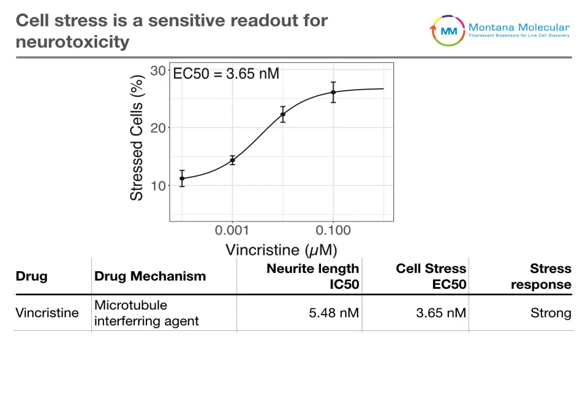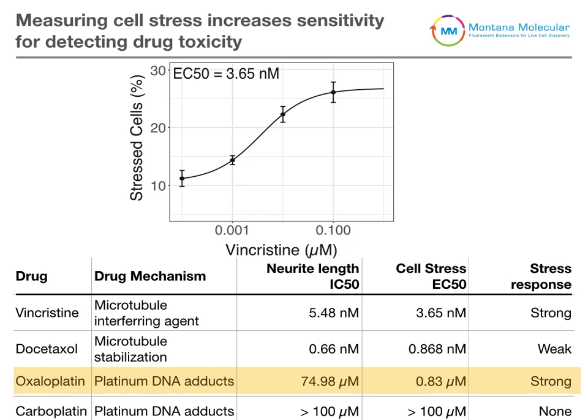Using the standard assay for chemotherapy-induced neurotoxicity — the measurement of neurite length — we have highly similar IC50 values for neurite length and EC50 values for the percentage of stressed cells. This holds true for a number of other compounds that we tested, except for oxaliplatin, where the cell stress assay was able to detect neurotoxicity about two orders of magnitude prior to the neurite outgrowth assay.